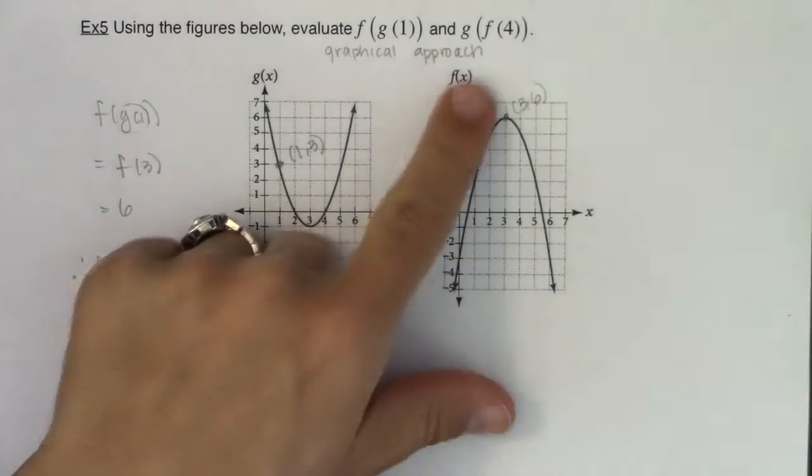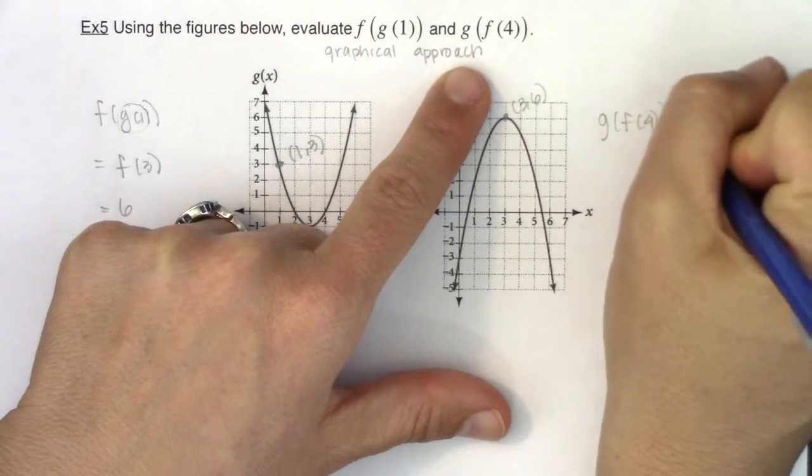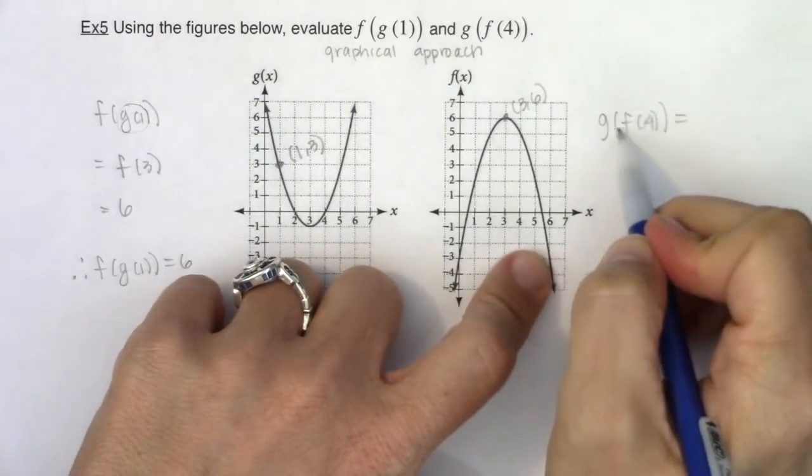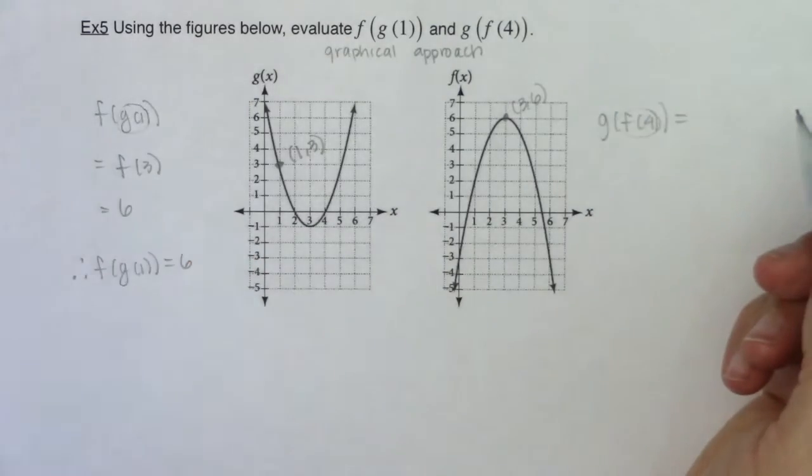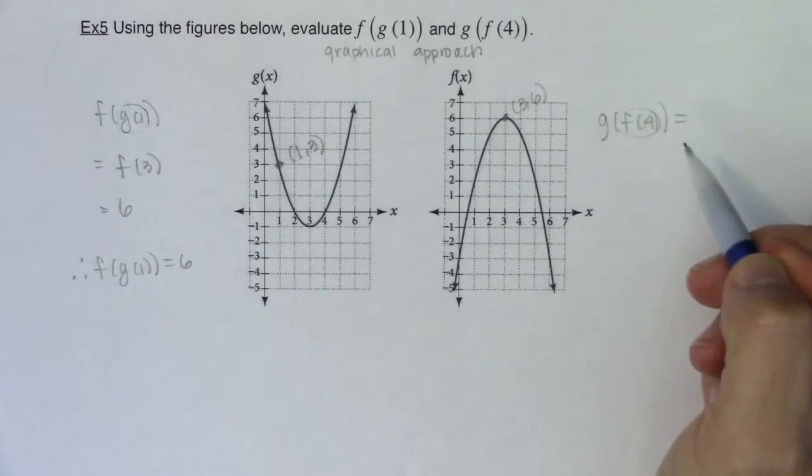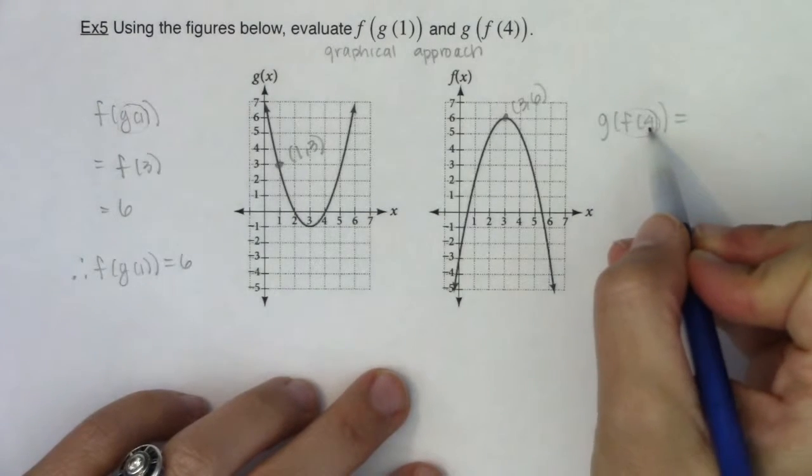Alright, let's try it here. Now we're being asked for g of f of 4. Okay, so I want f of 4 and again, oh before I do this, I would just pause it and try and get this number before I get it and then just unpause the video and see if you got it correct. Alright, I want f of 4.